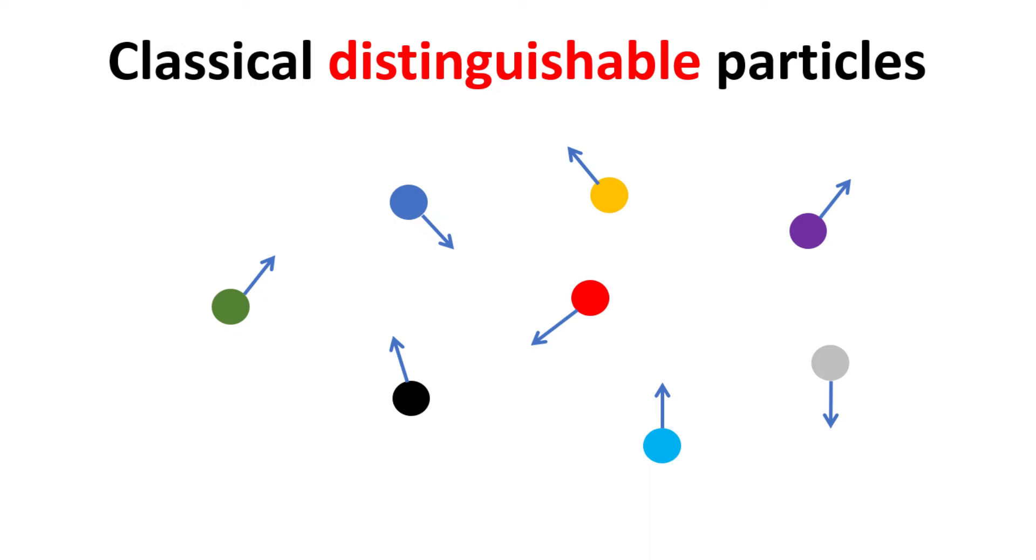This means their trajectory over time is deterministic, thus allowing us to effectively label each particle, like how I do it here with the different colors.